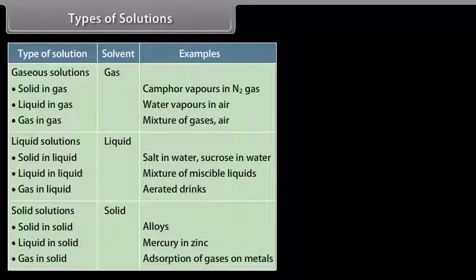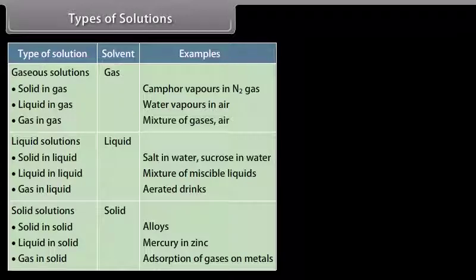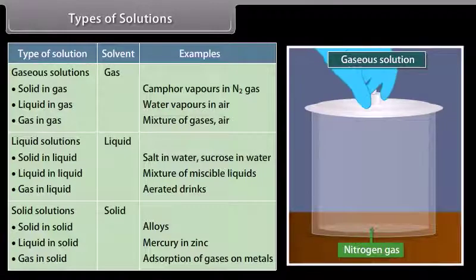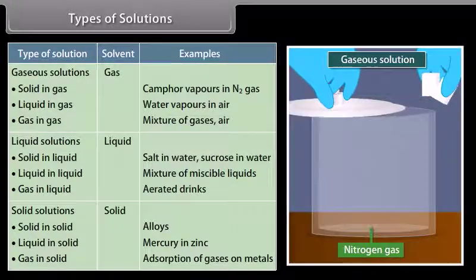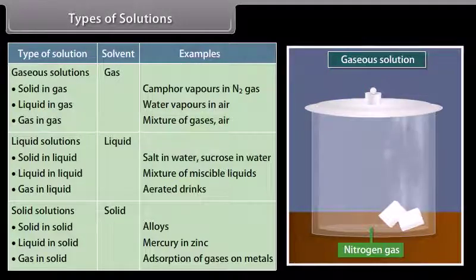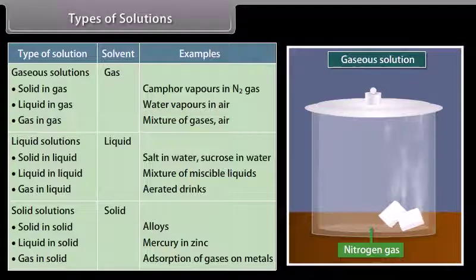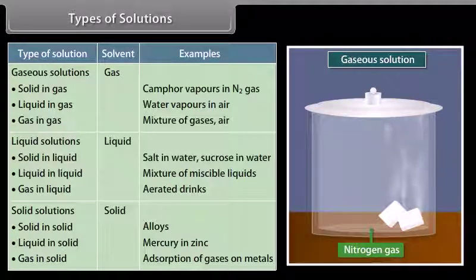In a binary solution, components can be either solid, liquid, or gas. There are three types of solutions: gaseous solutions, liquid solutions, and solid solutions. In gaseous solutions, gas is the solvent. They are categorized as: solid in gas — for example, camphor vapor in nitrogen gas.